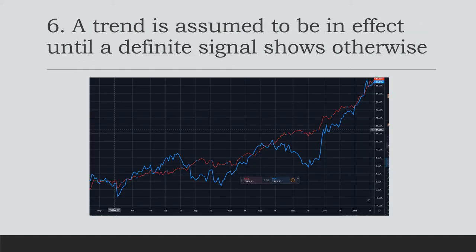The sixth and final tenet is that a trend is assumed to be in effect until a definite signal shows otherwise. This relates to Newton's law of motion — an object in motion tends to stay in motion — and a trend works the same way. A trend tends to continue whether it's an uptrend or a downtrend. Below is a quick example: this is a chart from May 2017 to early 2018 showing the Dow Transportation Average in blue and the Dow Industrial Average in red.